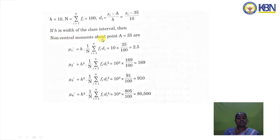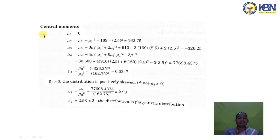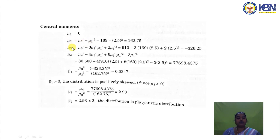Using the arbitrary point A = 35, the non-central moments are: μ1′ = h × (1/N) Σfi·di = 10 × (25/100) = 2.5. Similarly μ2′, μ3′, and μ4′ are calculated. The central moments are then derived: μ2 = μ2′ − (μ1′)², and μ3 and μ4 are computed from non-central moments.